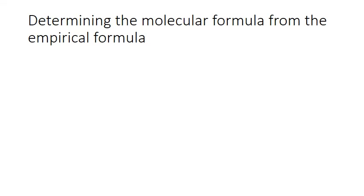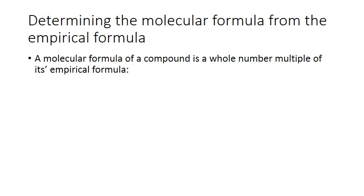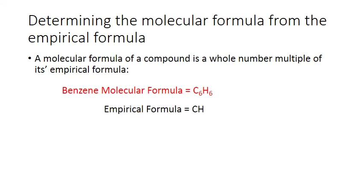An empirical formula is the lowest whole number ratio of atoms of different elements in a compound, and it's not necessarily the same as the molecular formula, which shows the actual number of atoms of each element in a compound. There is a definite relationship between the two — the molecular formula is always a whole number multiple of the empirical formula. For example, benzene has a molecular formula of C6H6, containing six carbon atoms and six hydrogen atoms. But this is not the lowest whole number ratio. Dividing both subscripts by six gives an empirical formula of CH, because the lowest whole number ratio of carbon to hydrogen is one to one.